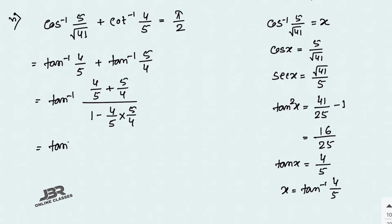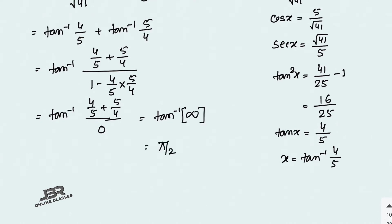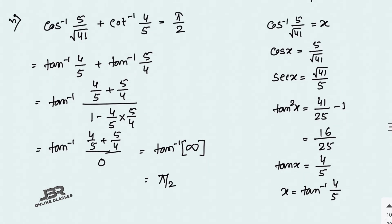The denominator becomes 0, so the expression is undefined for tan⁻¹. When tan⁻¹ is undefined it equals π/2, because tan(π/2) is undefined. So the answer is π/2. Proved. I hope it's clear.